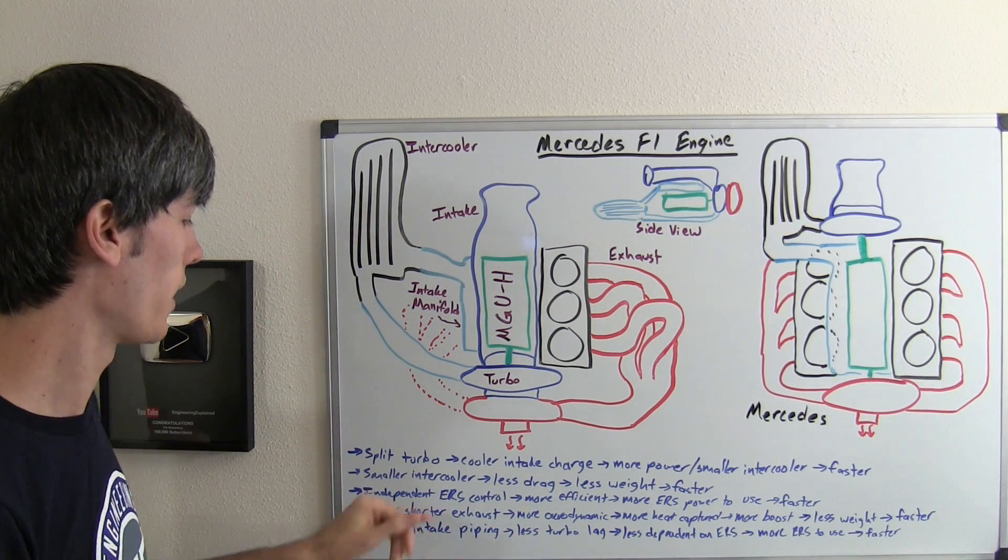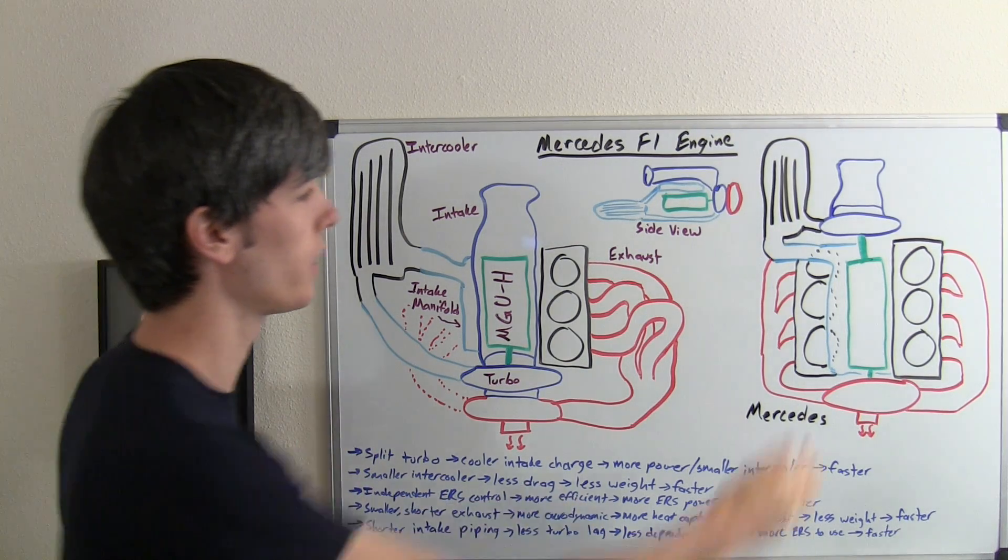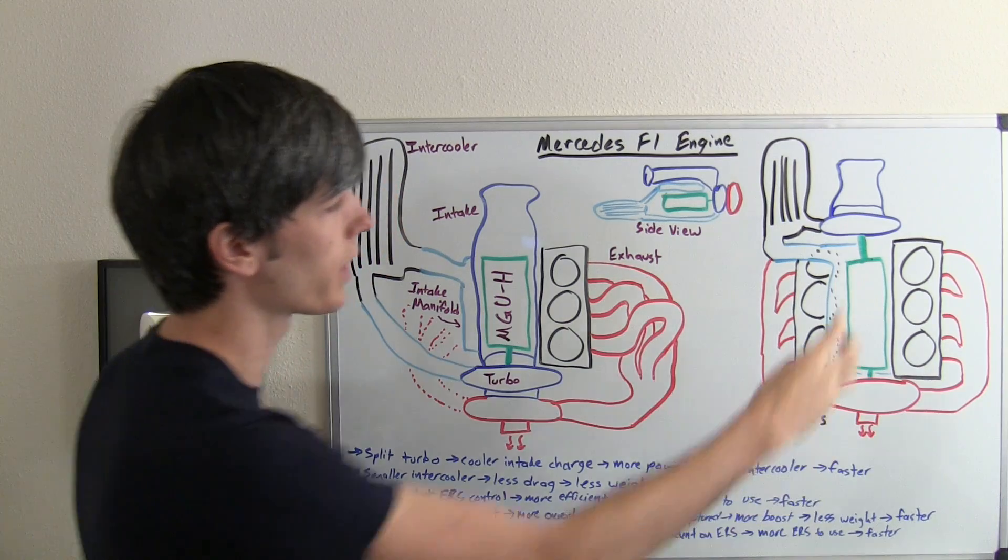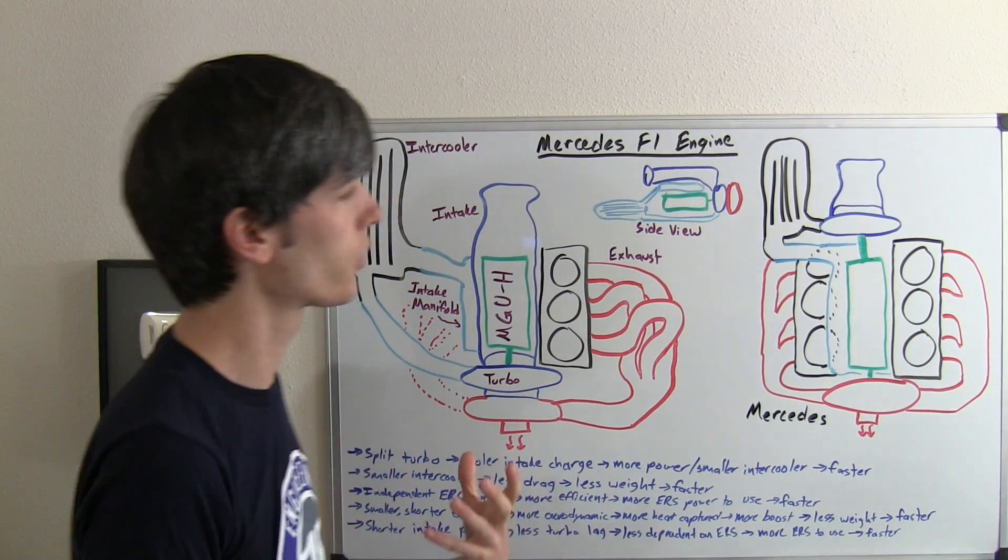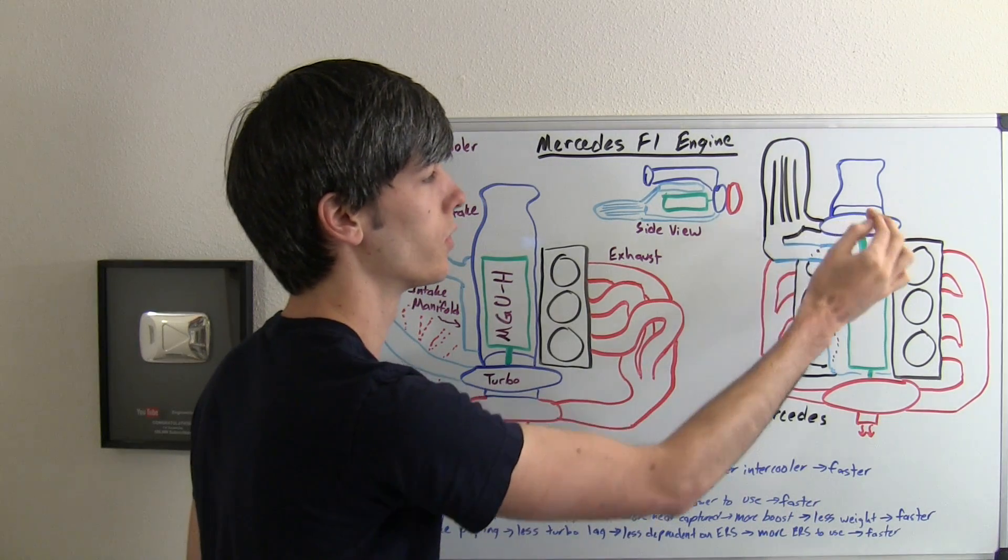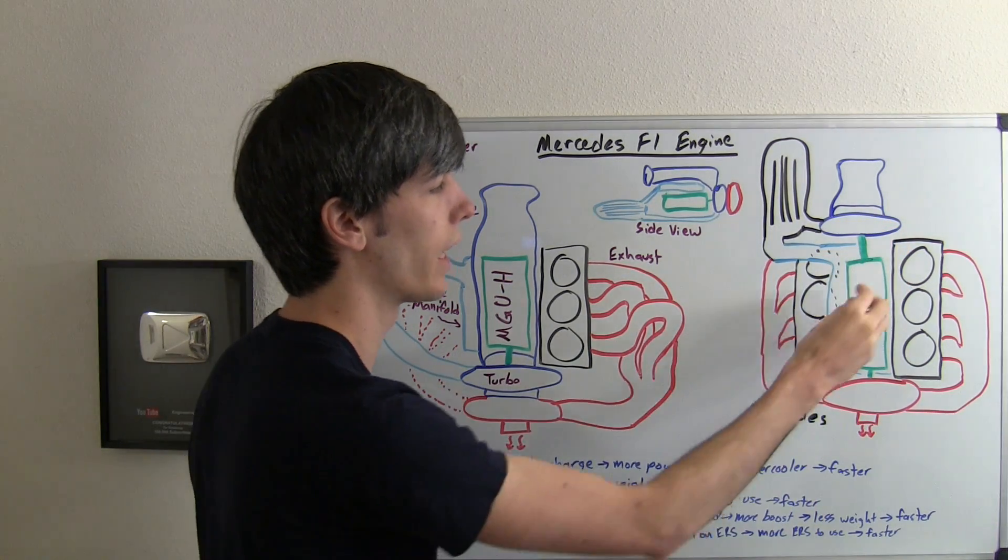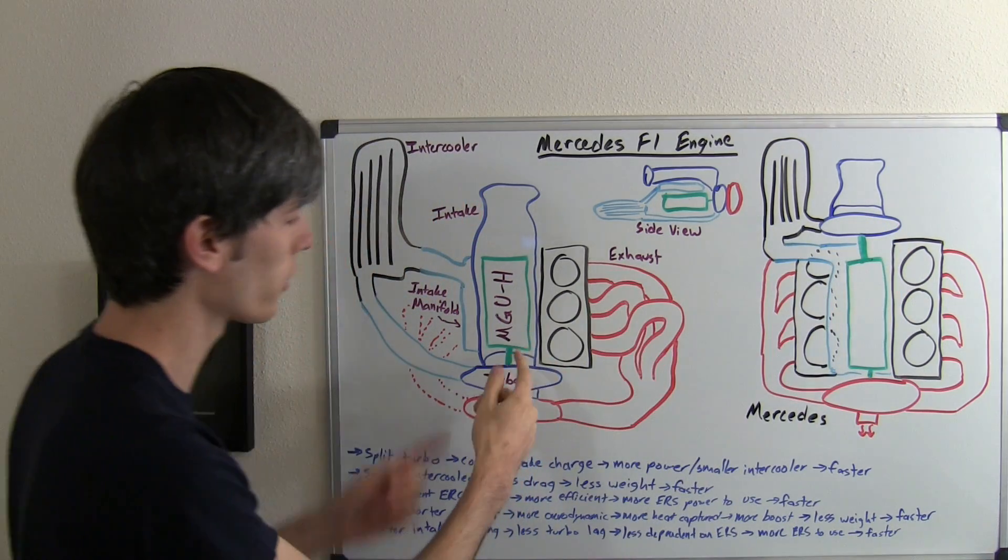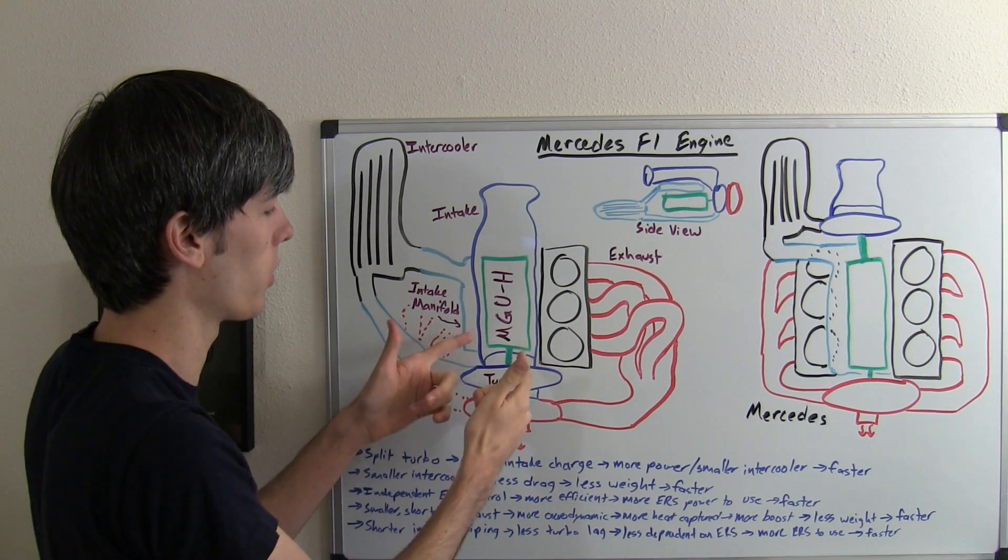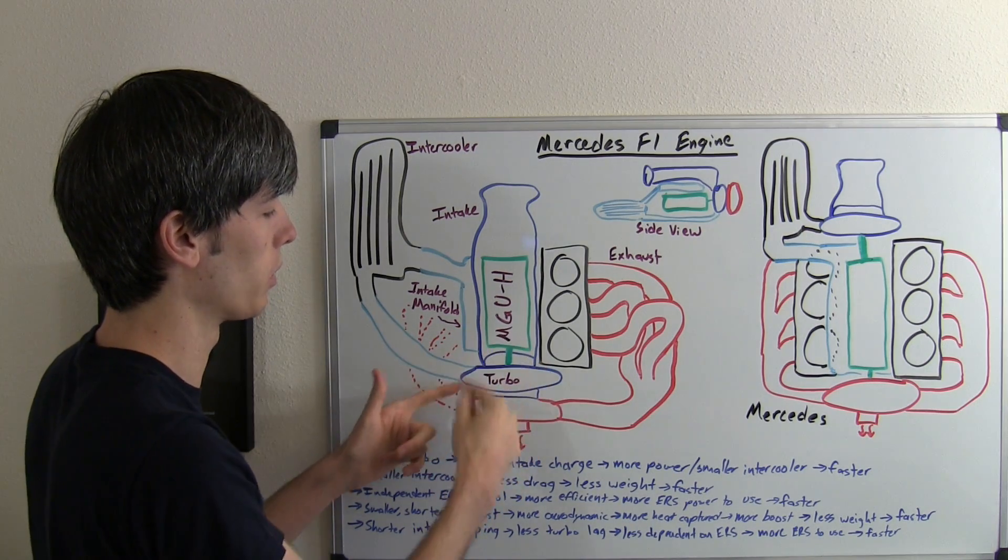Another difference is the independent control of the MGUH. Because this is between these two shafts, it could theoretically independently control one or the other. When you want to compensate for turbo lag, you can use this to spool up just the intake side, rather than on this one where if you want to compensate for turbo lag you would have to spool up both sides.